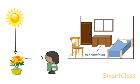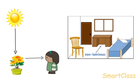We cannot see an object if light from that object does not reach our eyes. For example, the light from an object lying behind a wall does not reach our eyes, so we cannot see an object lying behind a wall.